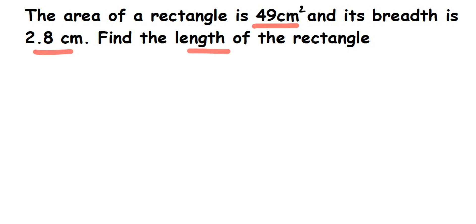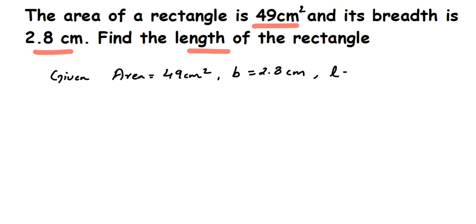Given: area is equal to 49 centimeter square and breadth is 2.8 centimeter. We have to find the length. From the breadth alone I cannot find the length, so I have to use the area. We know the area of a rectangle formula: area is equal to length into breadth. I'm going to substitute the known values — area is 49.